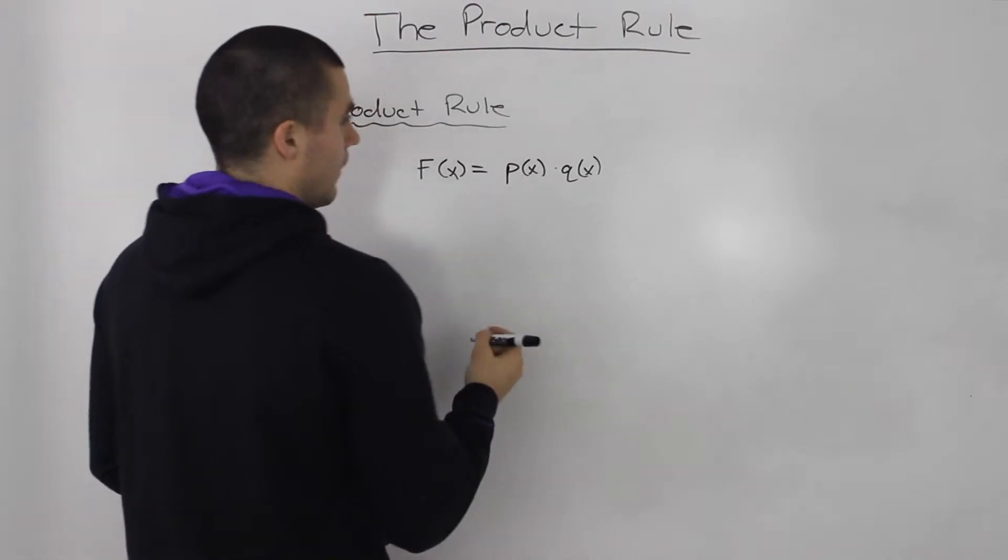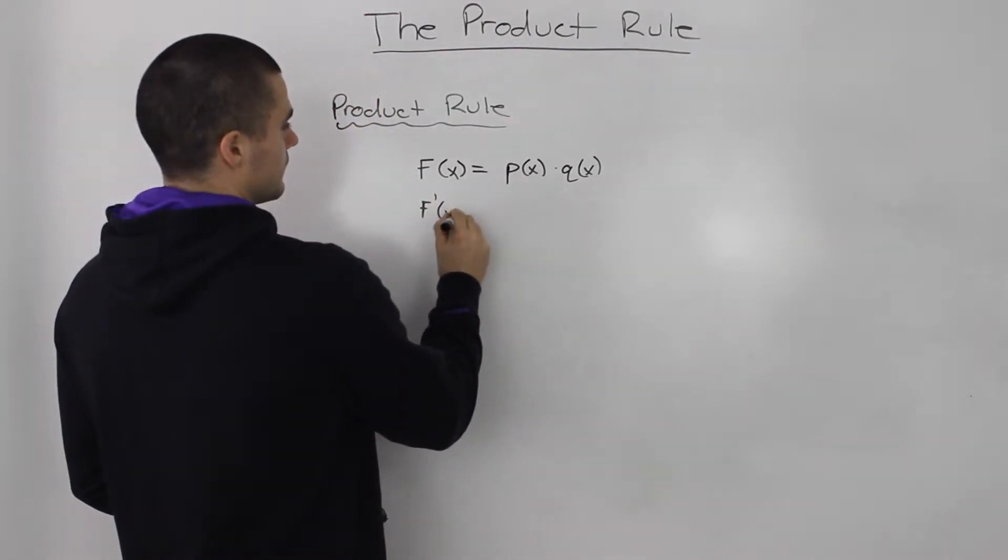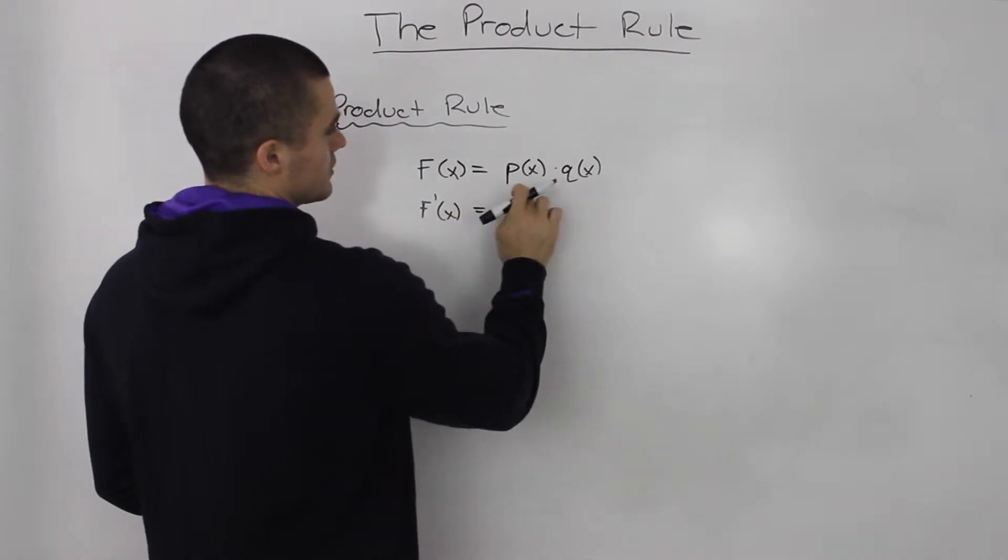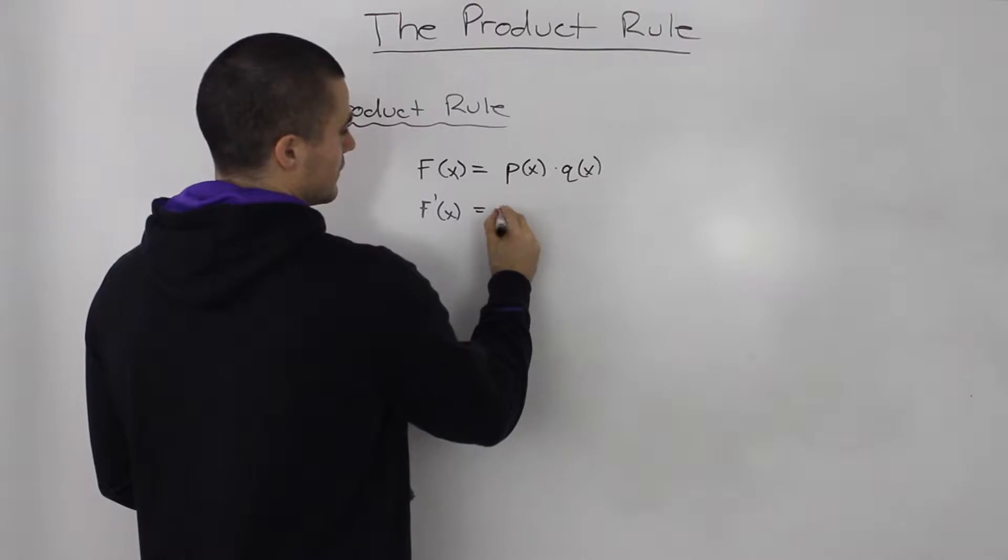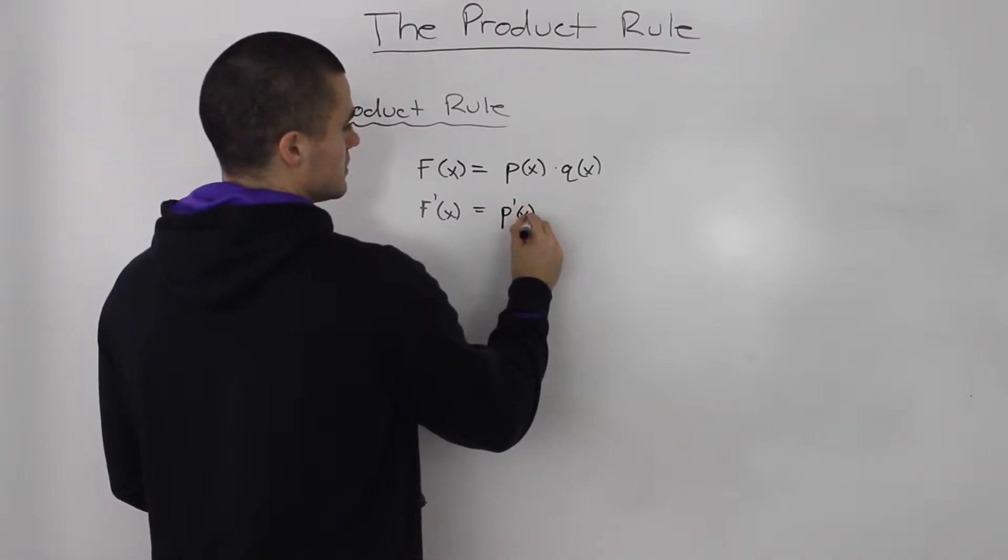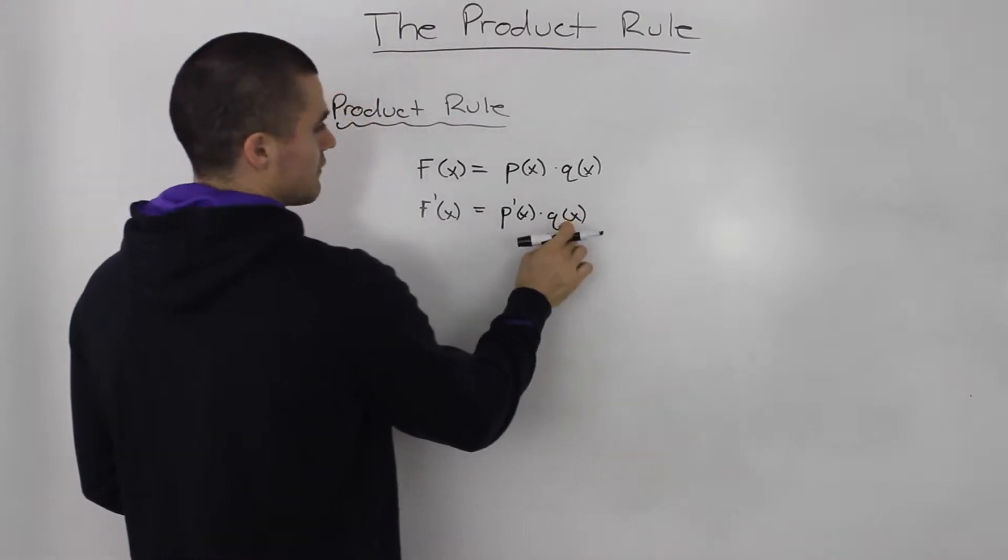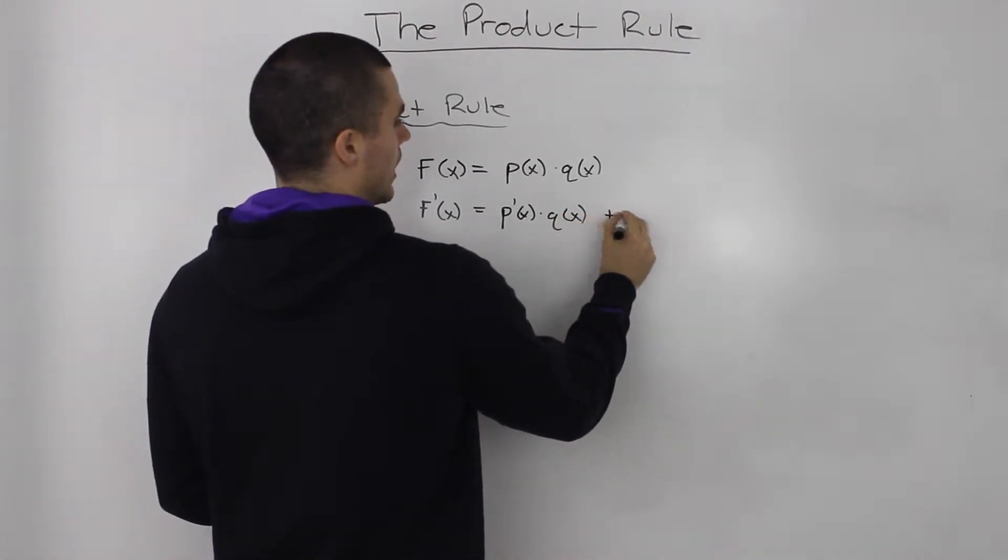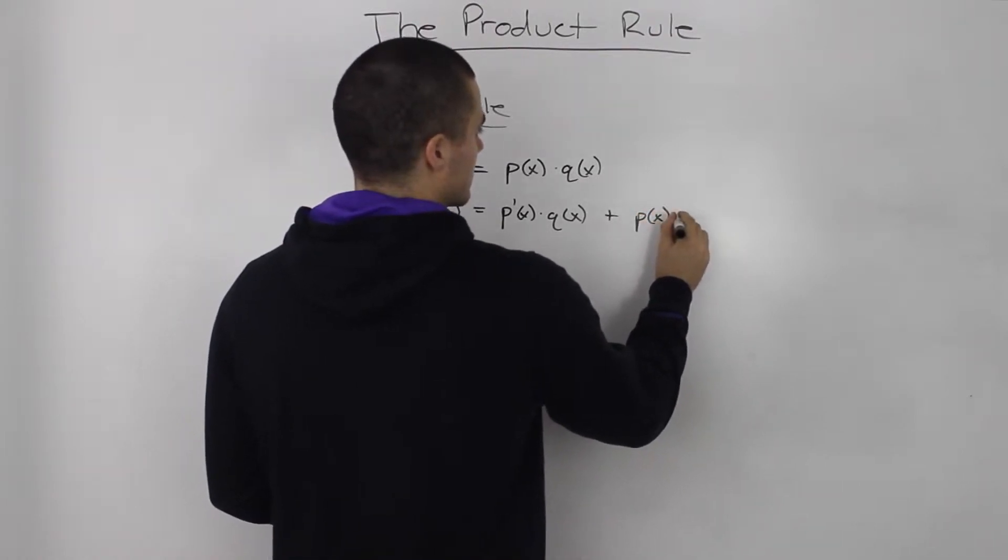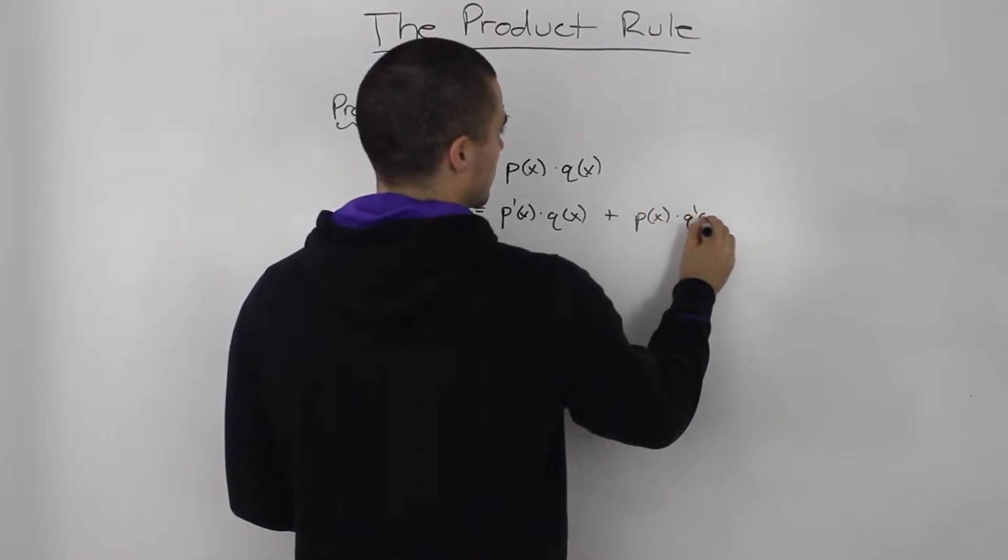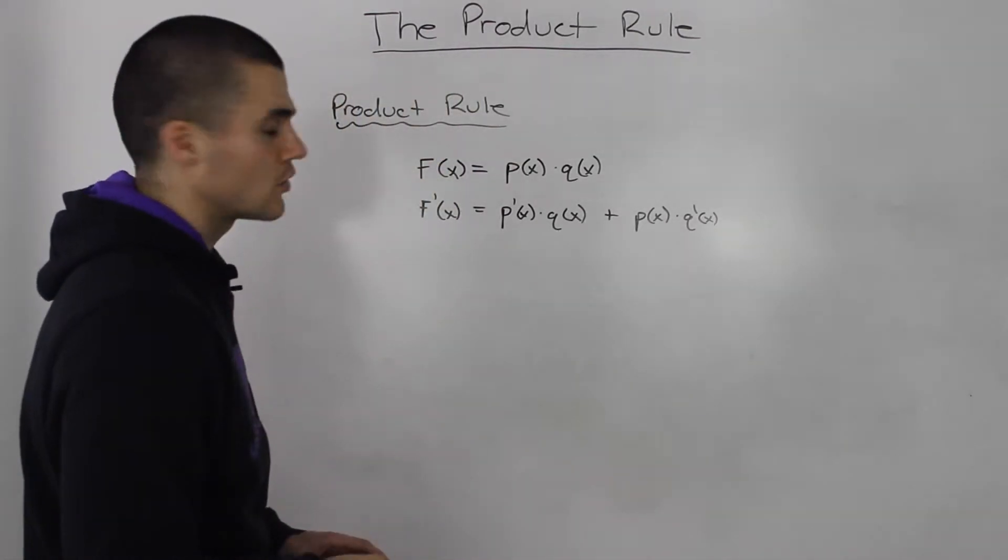well the derivative of a function of two functions multiplied together is going to be the derivative of the first function times the second function left by itself plus the first function left by itself times the derivative of the second function. And that's it. That's all the product rule is.